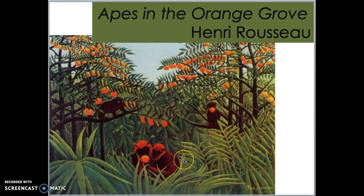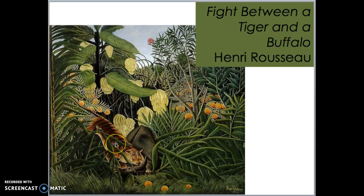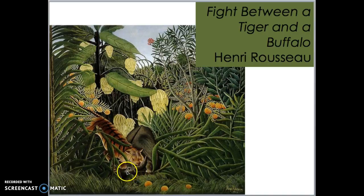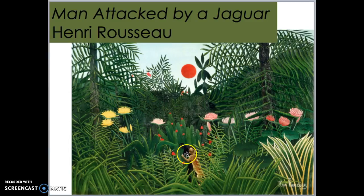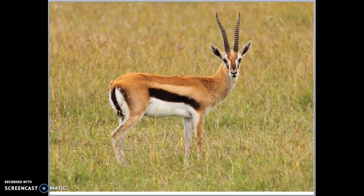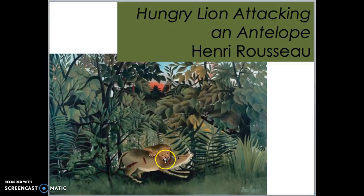Henri Rousseau, our jungle guy — very direct titles. Apes in the Orange Grove: a place where oranges grow is usually called a grove. Here we have Fight Between a Tiger and a Buffalo — this is what a buffalo looks like, with those big horns. You can see the buffalo's eyes, like he's thinking, 'I think I am losing the fight,' because the tiger definitely looks like he's winning. Then Man Attacked by a Jaguar by Henri Rousseau. And Hungry Lion Attacking an Antelope — this is what an antelope looks like, and what it looks like when it's being attacked by a very hungry lion.